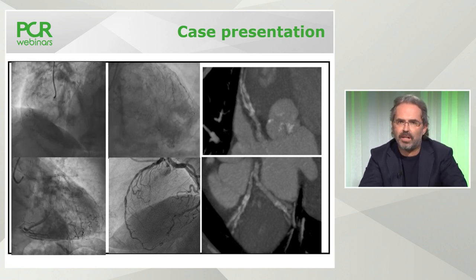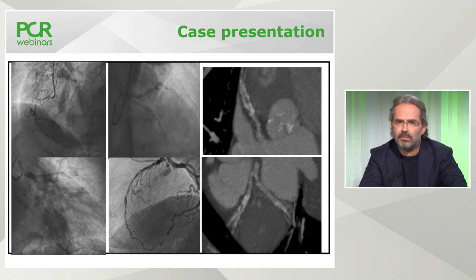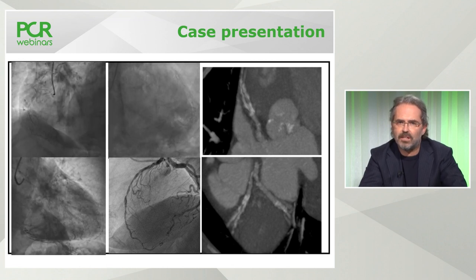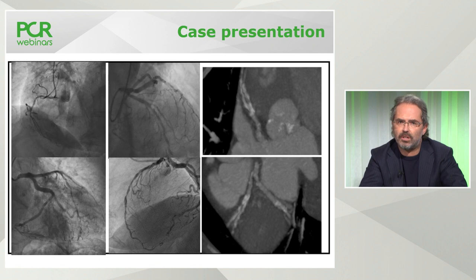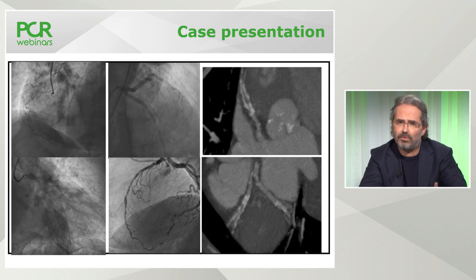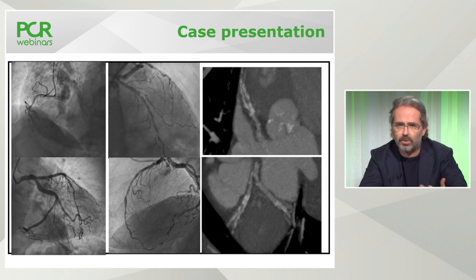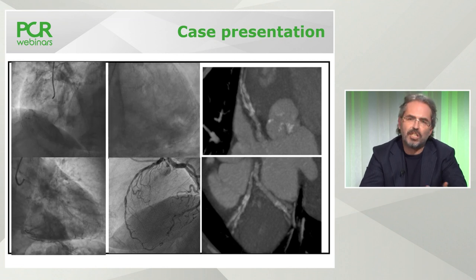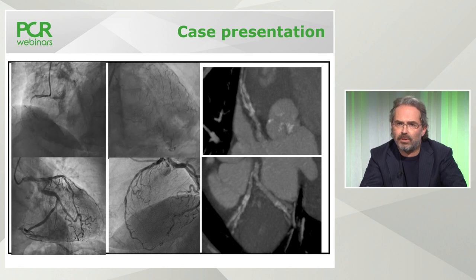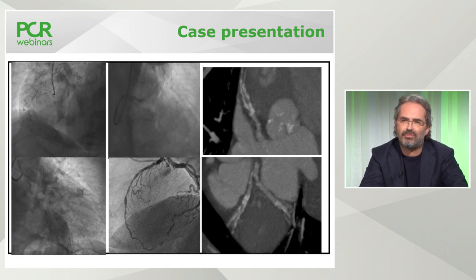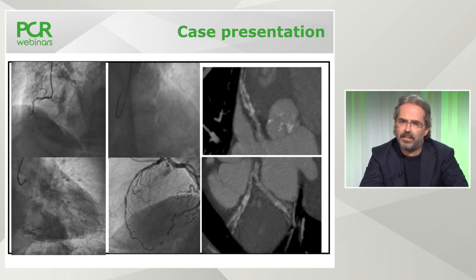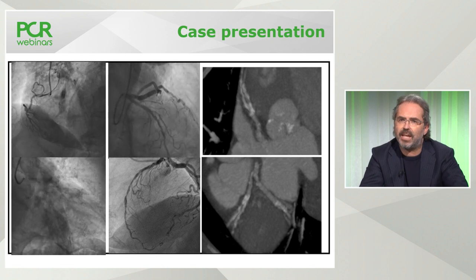The coronary angiogram of the left and right coronary arteries shows a kind of left dominance with diffuse disease — moderate at the level of the circumflex — but there is a diffuse, apparently severe lesion at the level of the LAD. It's difficult to say if it is focal or diffuse. What is impressive is the amount of calcification of the coronary artery, especially the LAD, which is diffusely and heavily calcified.